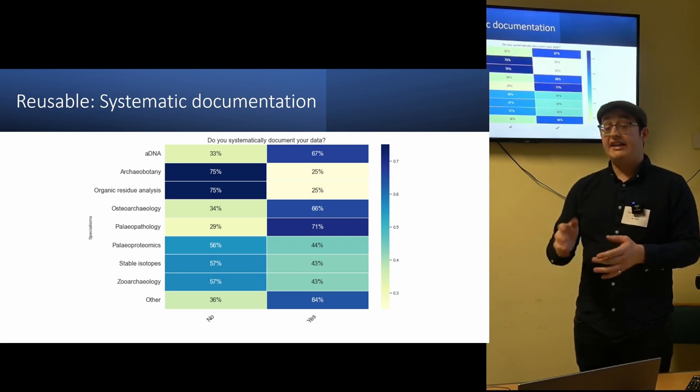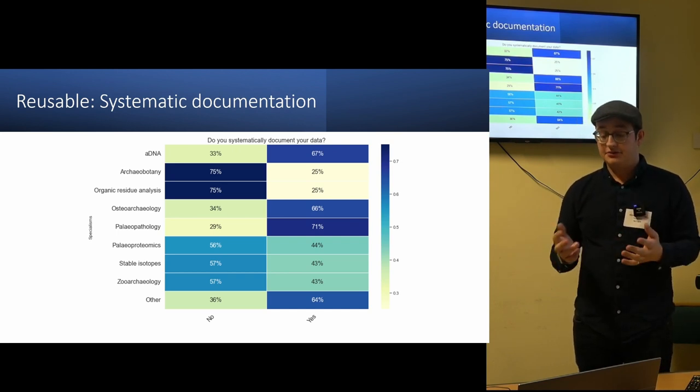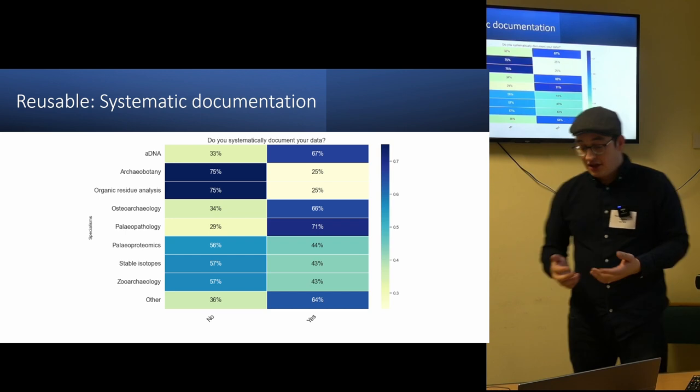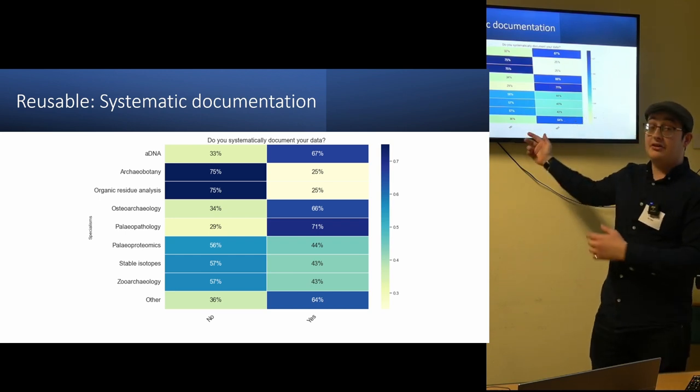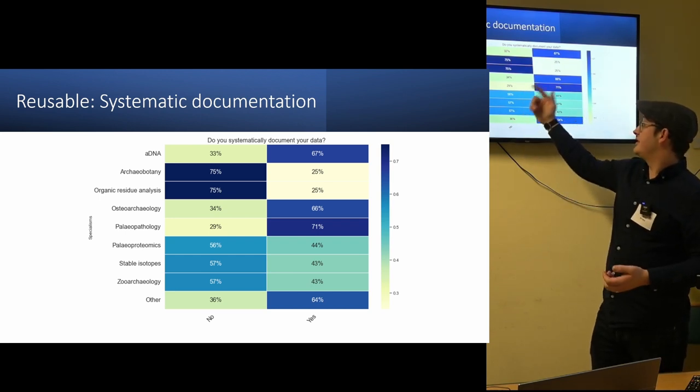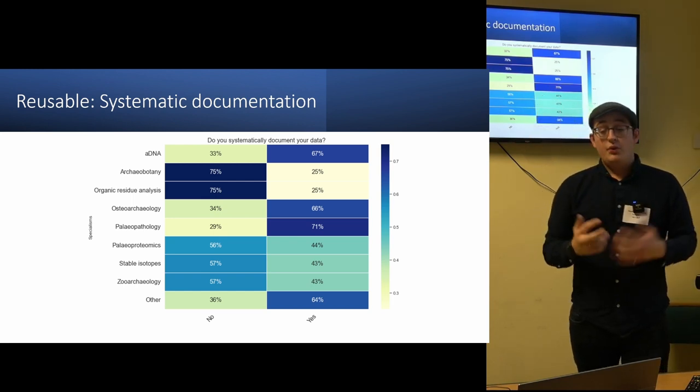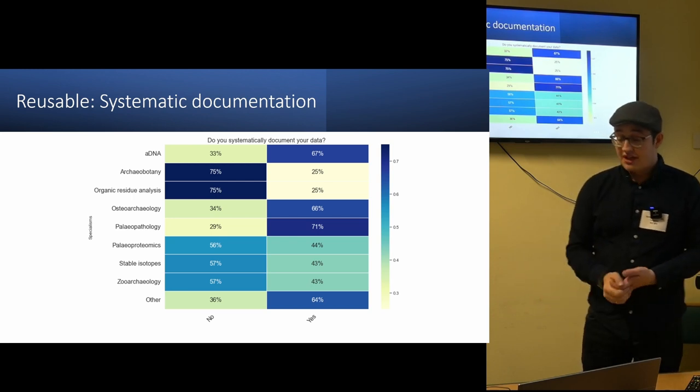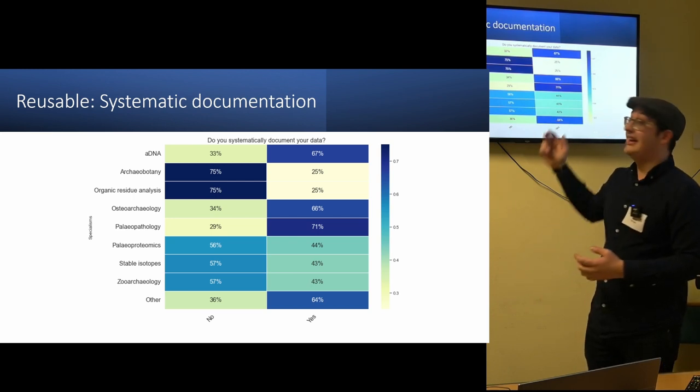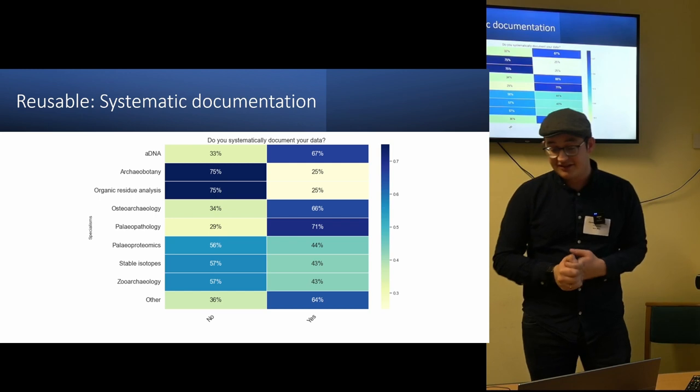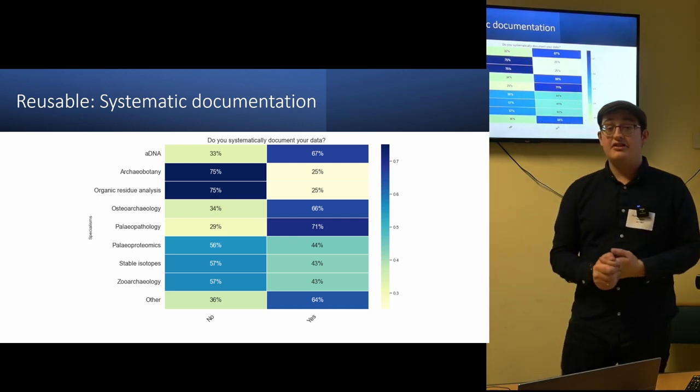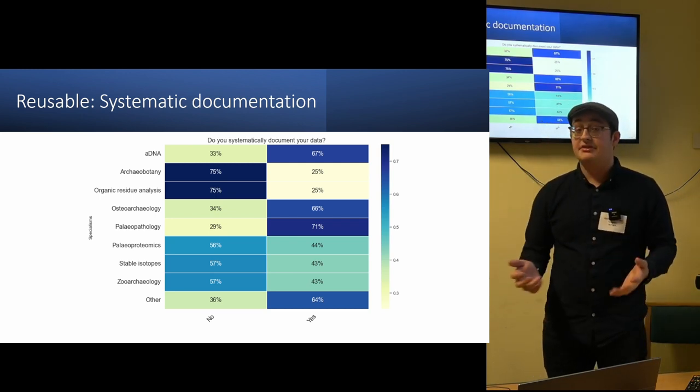In terms of systematic documentation, this entails writing what each file contains and also the file version it is. Quite a lot of people do not systematically document, particularly prevalent in archaeobotany and organic residue analysis, which means that people may not know which file is best to use. However, quite a few people did say that their data is systematically documented, which is good news. And then people can know exactly which file and what has happened to the data beforehand.